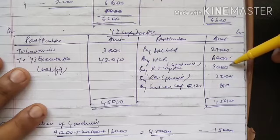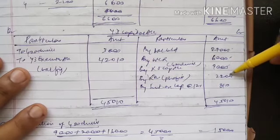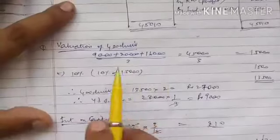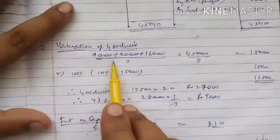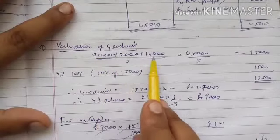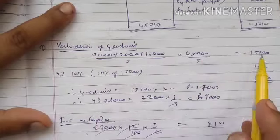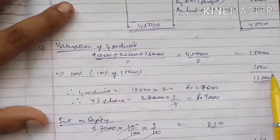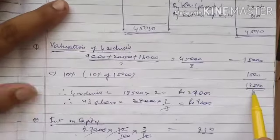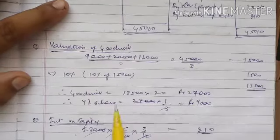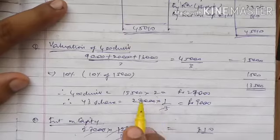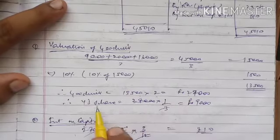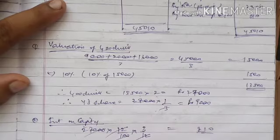Then we prepare Y's capital account. First we write the capital, then distribution of WCR (Workman Compensation Reserve), then distribution of goodwill, revaluation profit, and interest. For goodwill calculation: last three years' profits total 45,000, divided by 3 gives 15,000 average. Less 10 percent — that's 1,500 — gives 13,500. Goodwill is two years' purchase: 13,500 multiplied by 2 equals 27,000. Y's share equals 9,000.